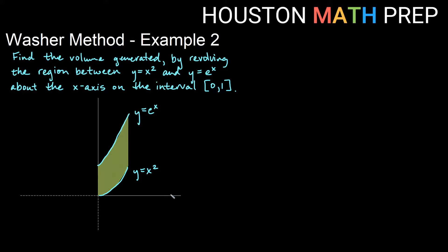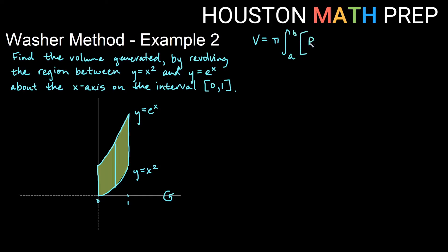We're revolving the region about the x-axis. Our interval is 0 to 1. For the washer method, the rectangle must always be perpendicular to the axis of revolution, so we need a vertical rectangle when revolving about the x-axis. That tells us we are integrating dx. Our formula is pi times the integral from a to b of the farther radius squared minus the closer radius squared, integrating dx.